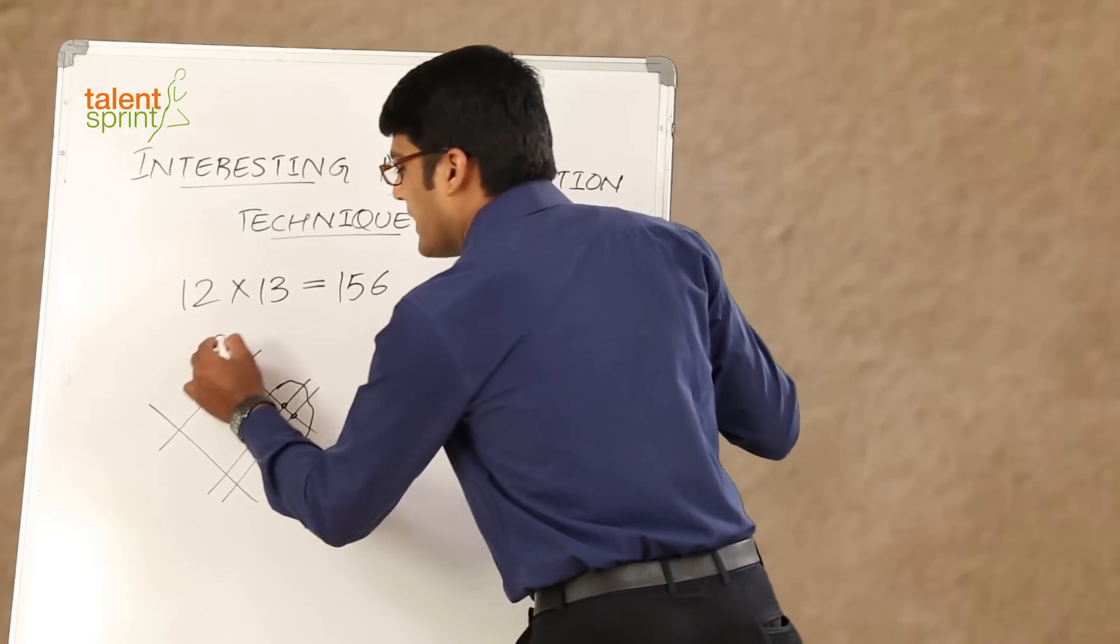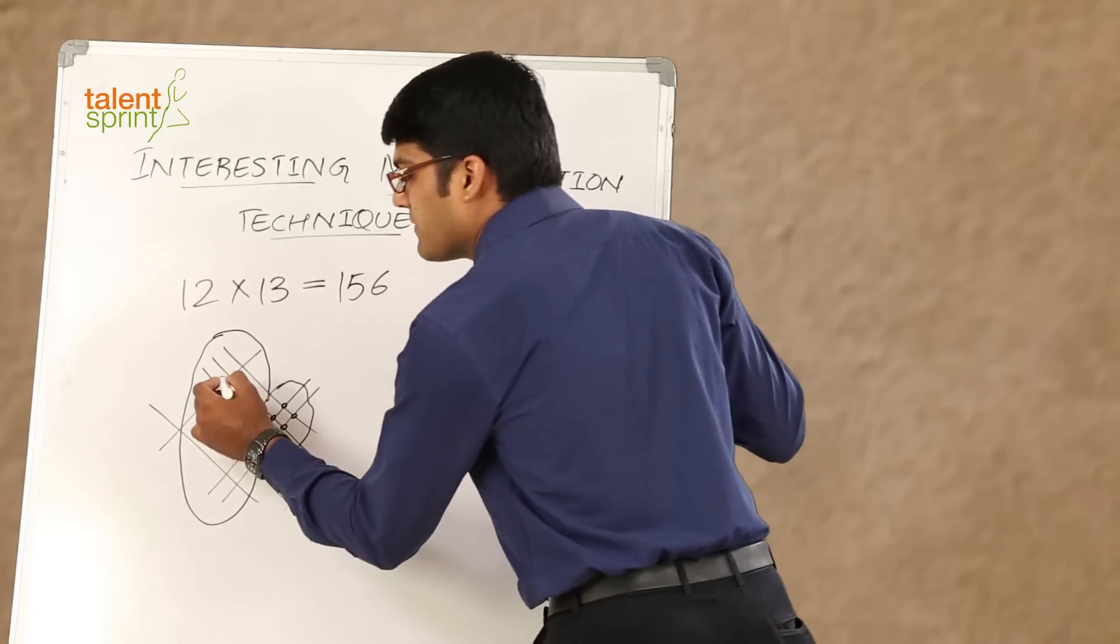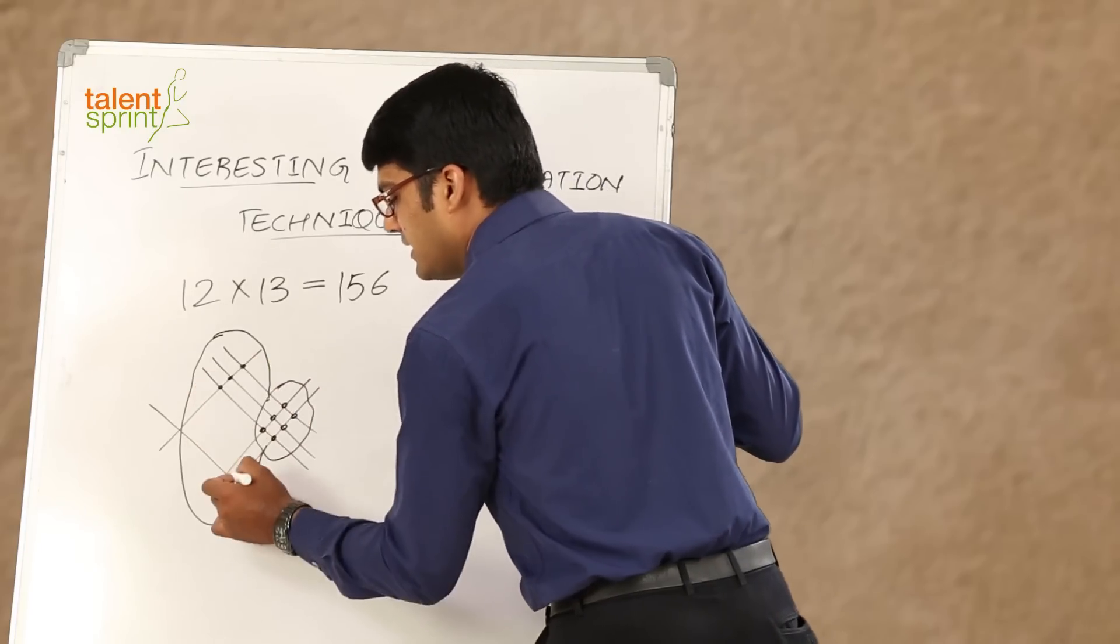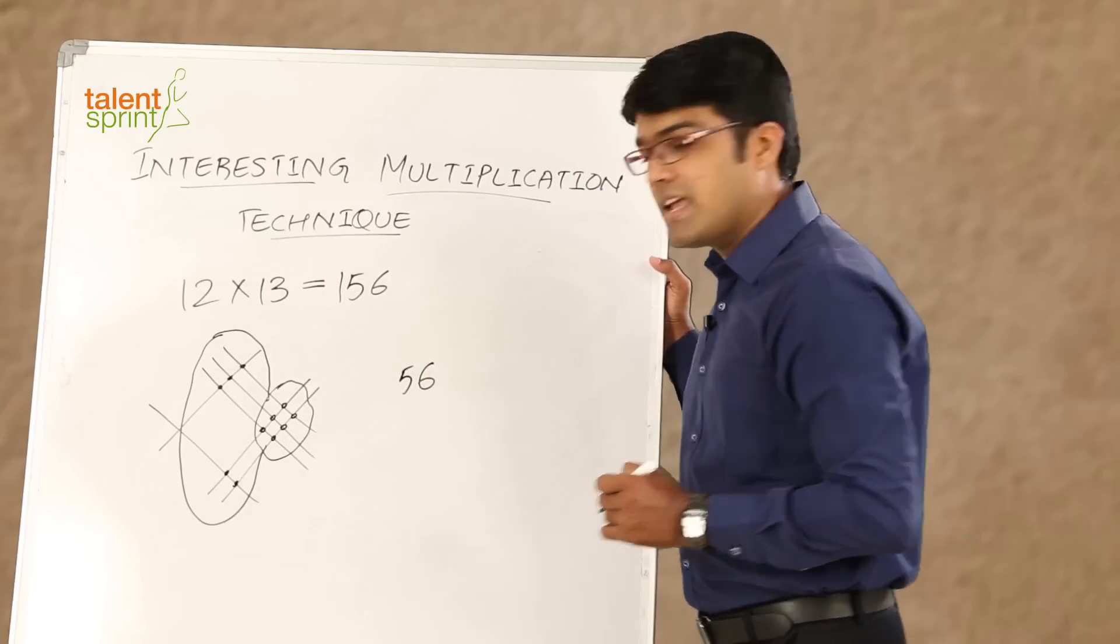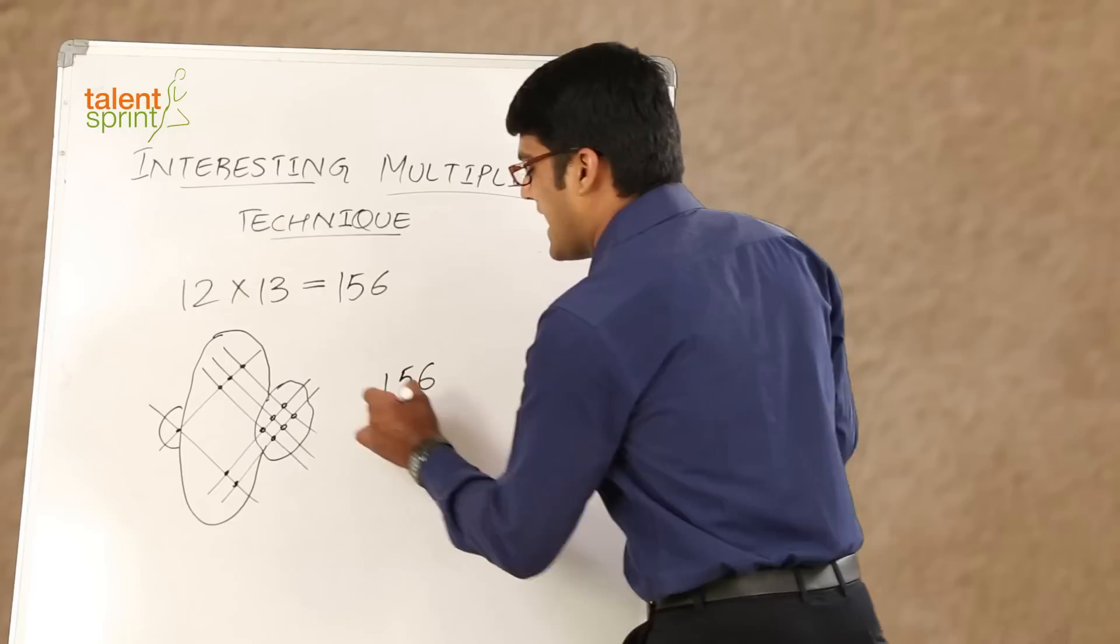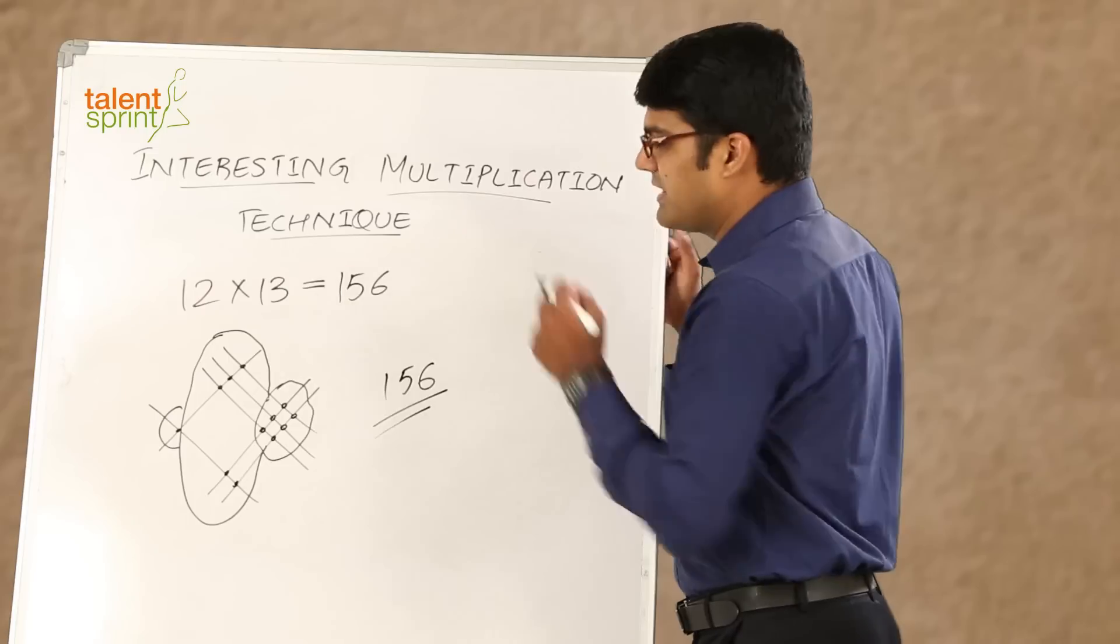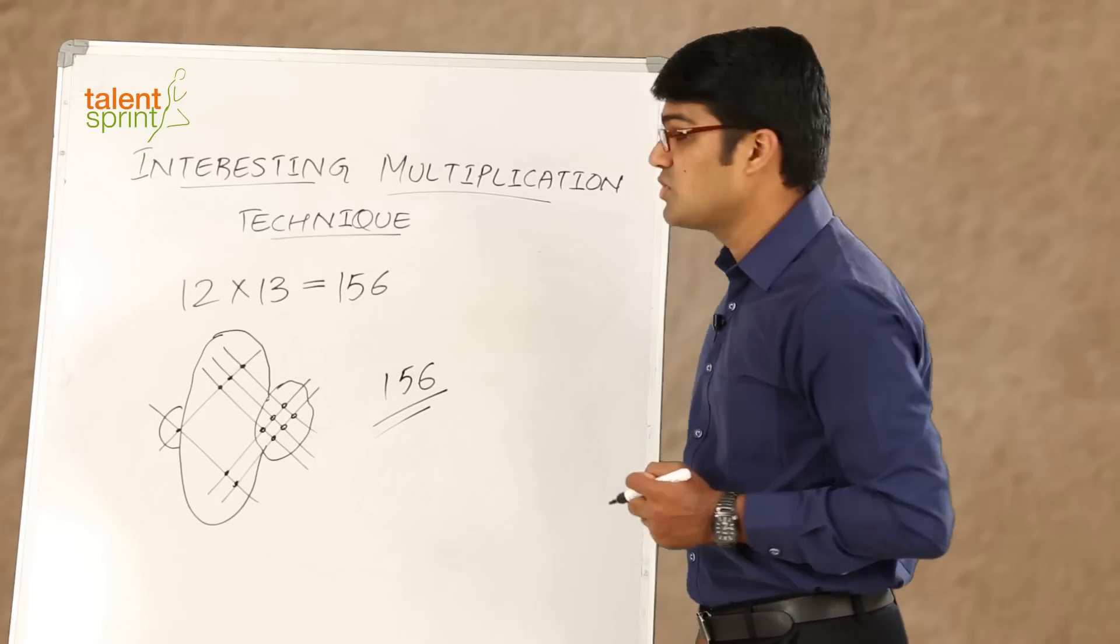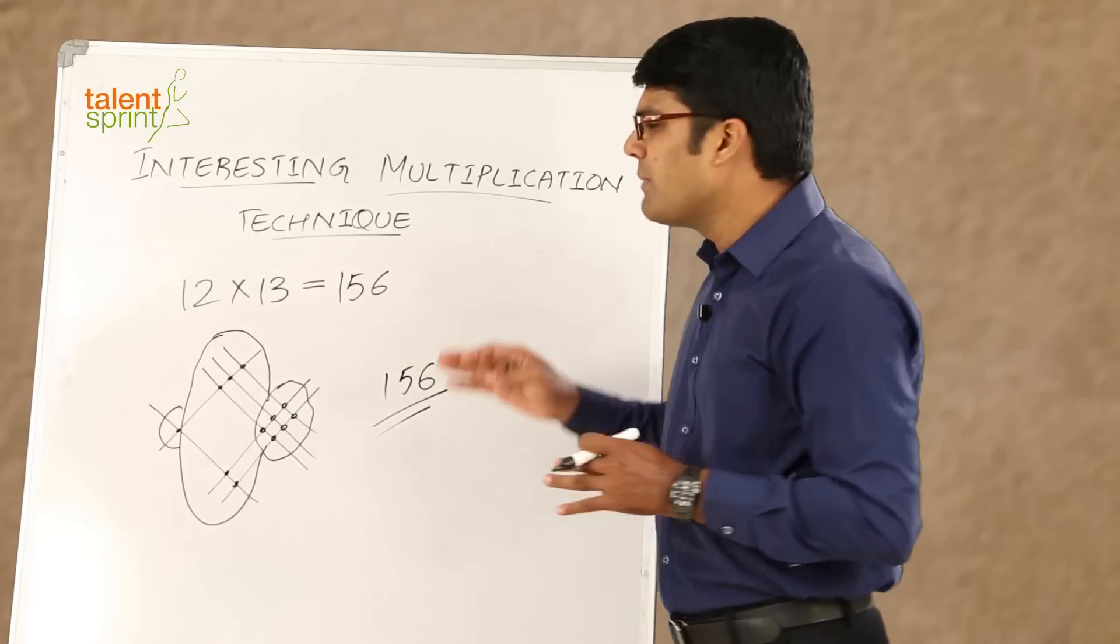Then what do we do? Look at the second part of it. The number of points of intersection: 1, 2, 3, 4, and 5. So 5 comes in the tens place. And look at the last part here, only one point of intersection. So that 1 becomes the hundreds place, and the answer here is 156. That is what we had got, right? 156. So 12 into 13 is equal to 156. So this is how you can multiply numbers in this interesting method.